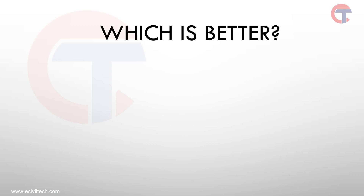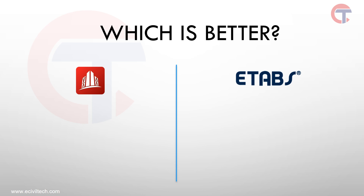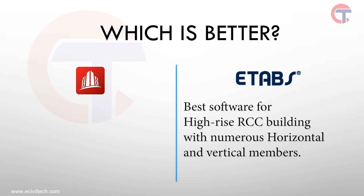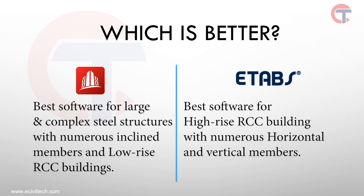The next question is which software is better for design. We could spend an hour discussing this, but the conclusion is simple. If you need software for a high-rise building with numerous horizontal and vertical members, ETABS is the best choice. If you are designing a steel structure or a low-rise building and want to save time and work fast, then STAAD.Pro is the best software.